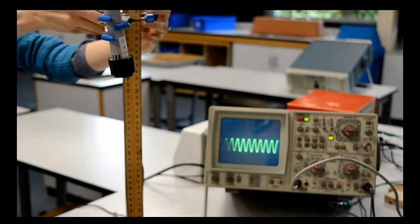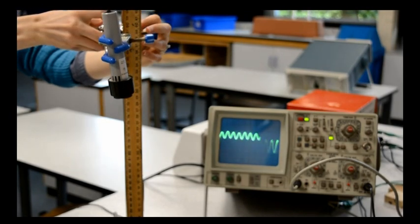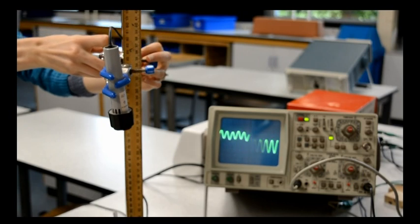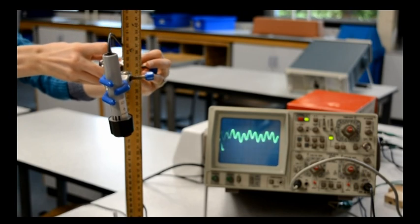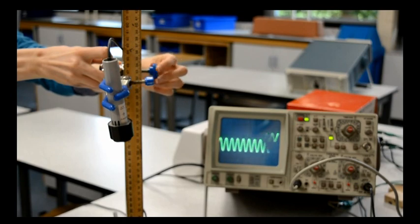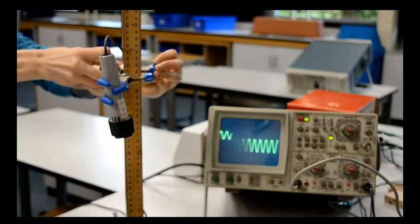As the microphone moves, the two traces move relative to each other. If you measure the distance the microphone has to travel to go out of phase, you can then work out the wavelength of the wave.